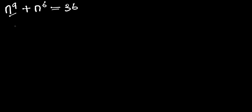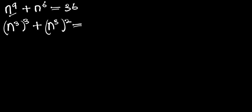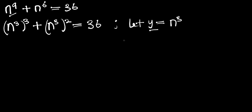Instead of n to the power 9 we can express it as n to the power 3, all to the power 3. We do the same thing for n to the power 6, writing it as n to the power 3, all to the power 2, and this equals 36. At this point we let y equal to n to the power 3, so wherever we have n to the power 3 we replace it with y. We now have y to the power 3 plus y to the power 2 equals 36.